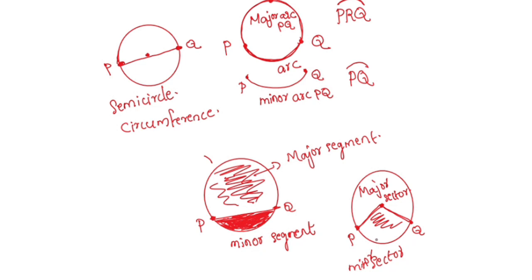The region between an arc and the two radii joining the center to the ends of the arc is called a sector. Now let's go to the 10.1 exercise.